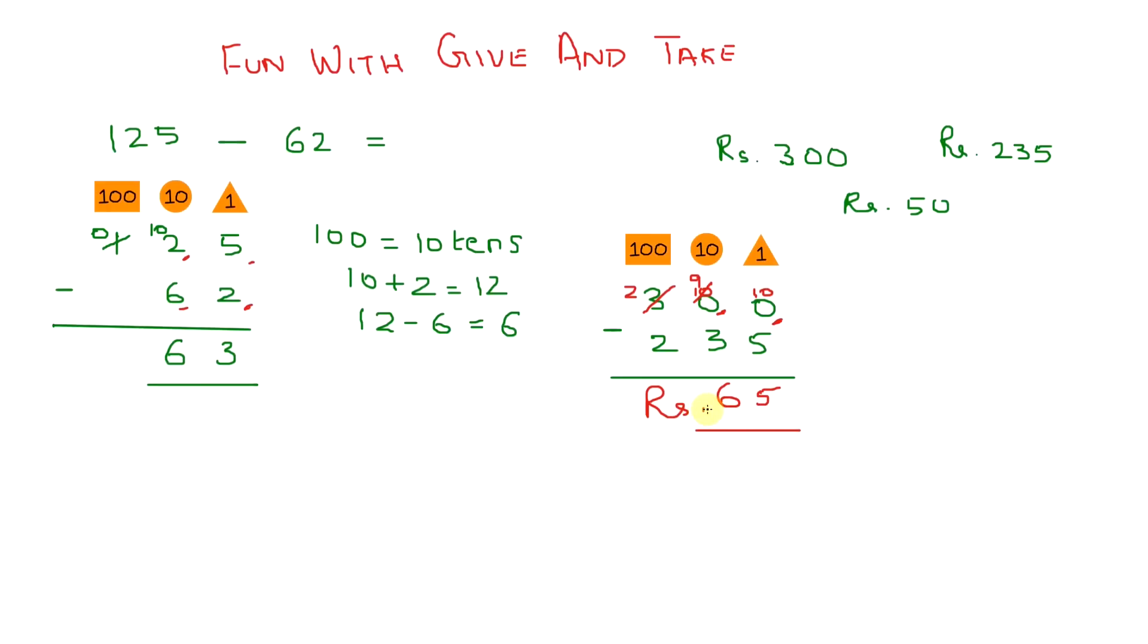So the shopkeeper must pay back rupees 65, but he only gave you back rupees 50. So how much more should you get? 65 minus 50 equals rupees 15. So you should have gotten back 15 more rupees. That wasn't a nice shopkeeper. It's a good thing that you know your change and how to calculate how much you should get back.